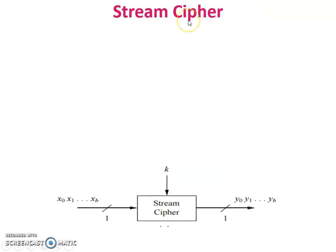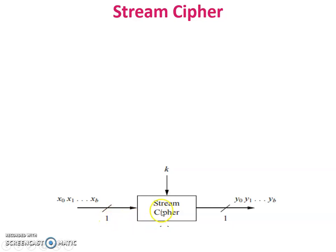Stream cipher — the name suggests itself. The input bit, or we can say input plain text, is in a stream, and the cryptographic algorithm is applied on that stream. So it generates stream cipher output.